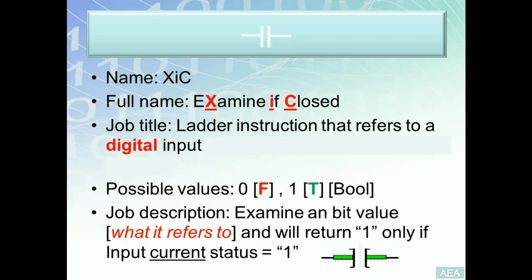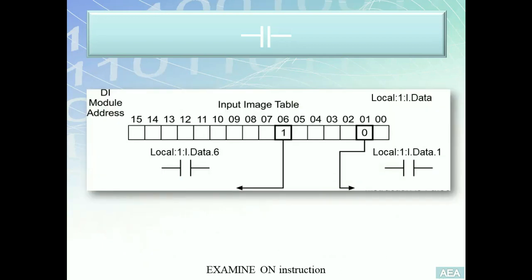If the instruction is false, it will not display the green bars on both sides. Let's look at a small example to illustrate the concept. We have two XICs — one to the left and one to the right. The one on the left has an address tying it to the input wired to input terminal number six. I have no idea what type of input it is. The one on the right is tied to input terminal number one, as you can see from the address.